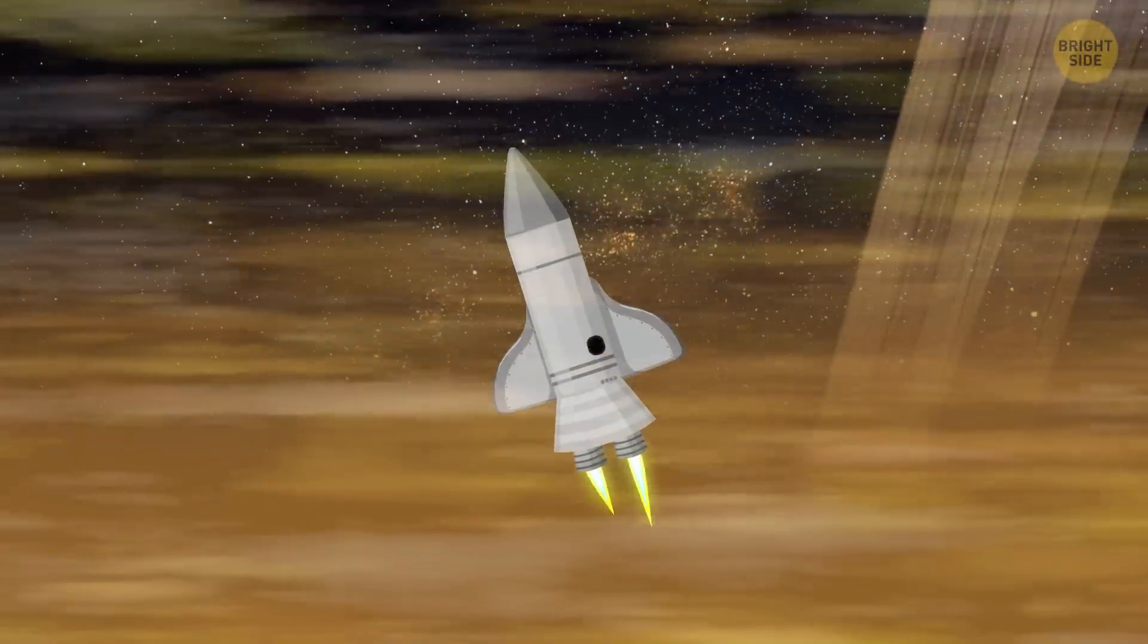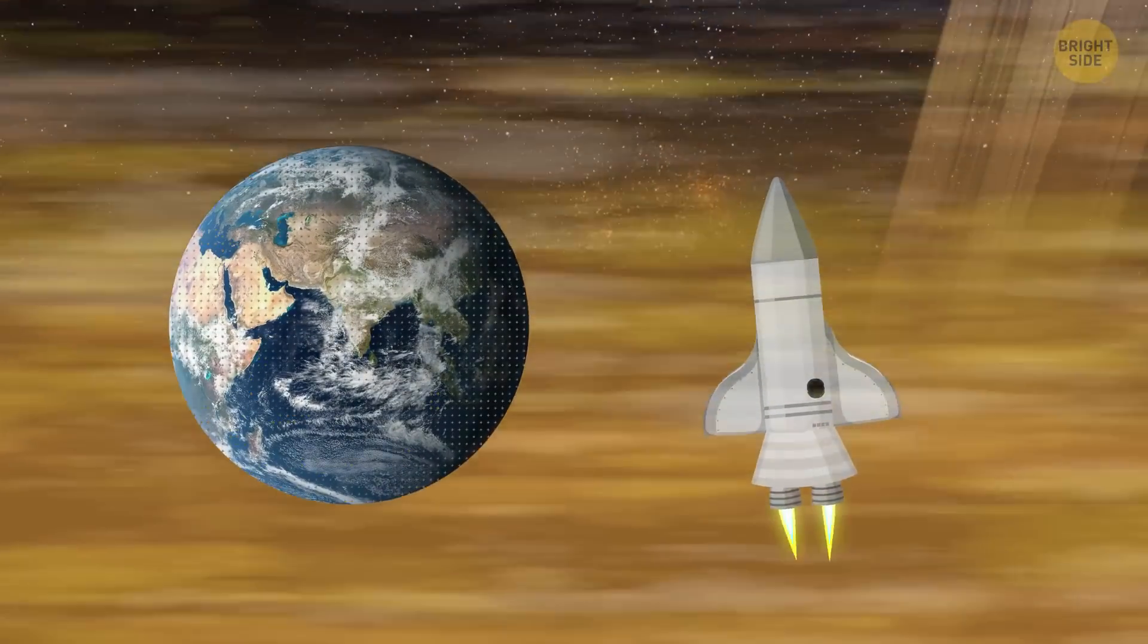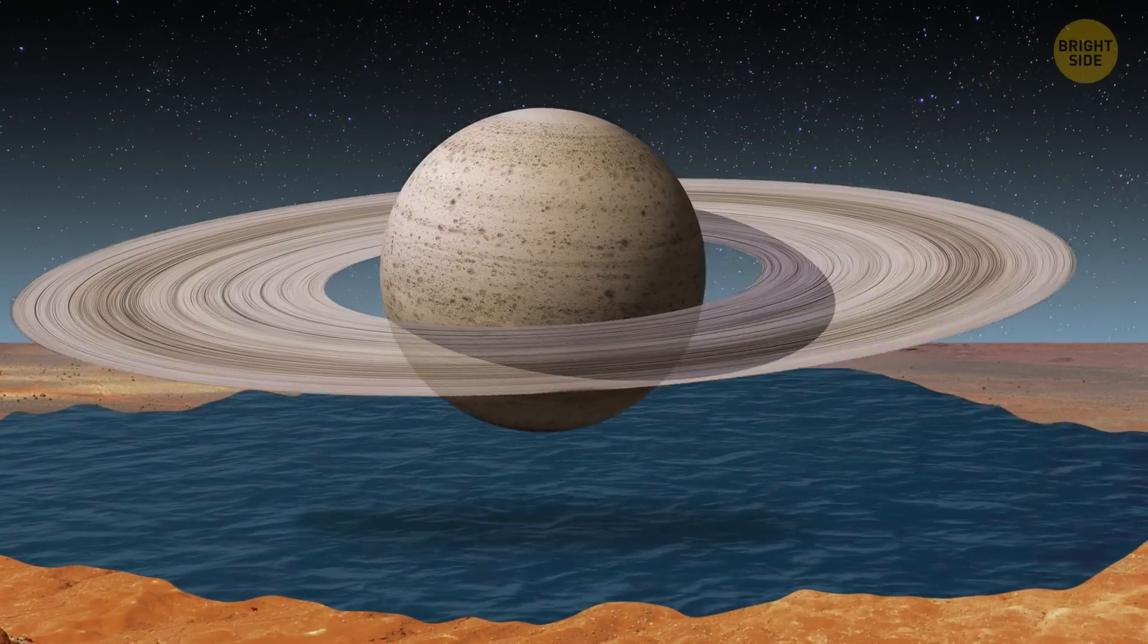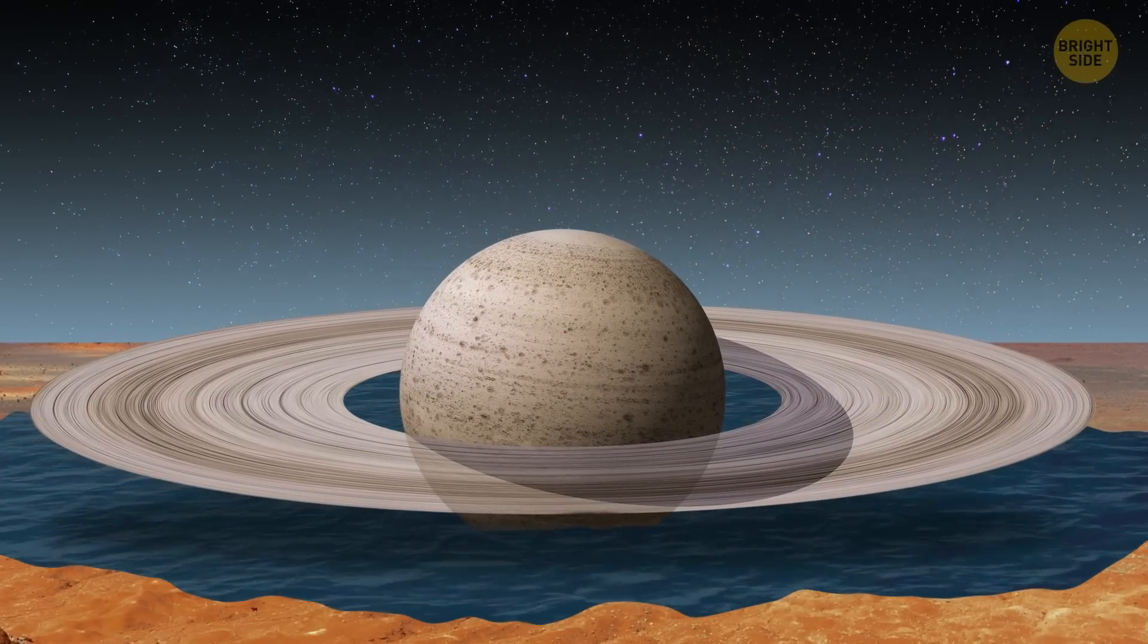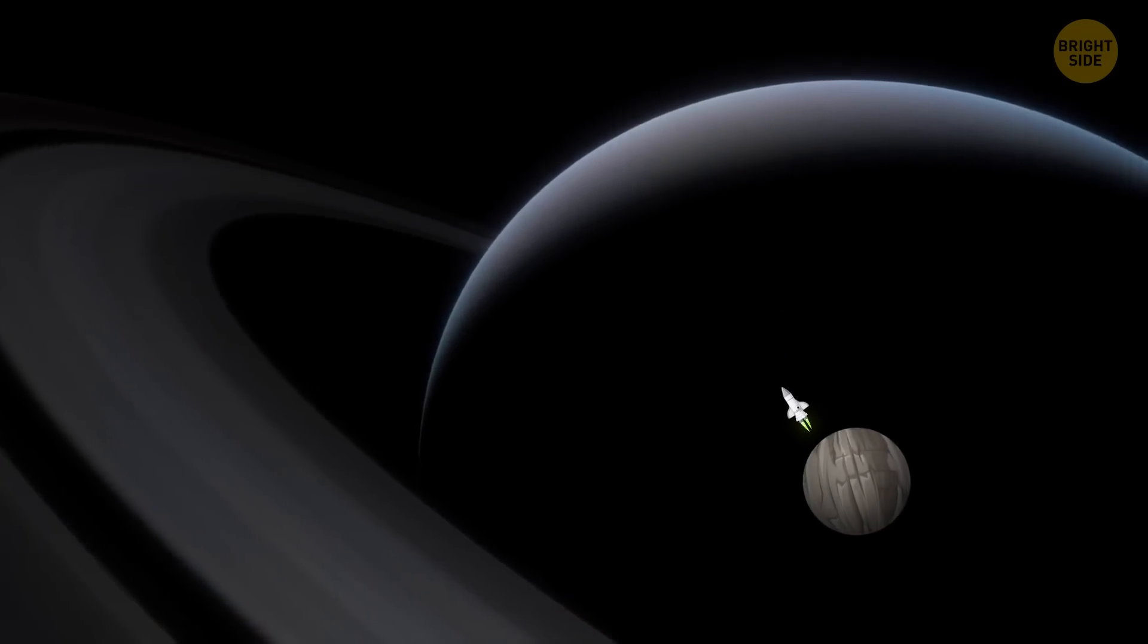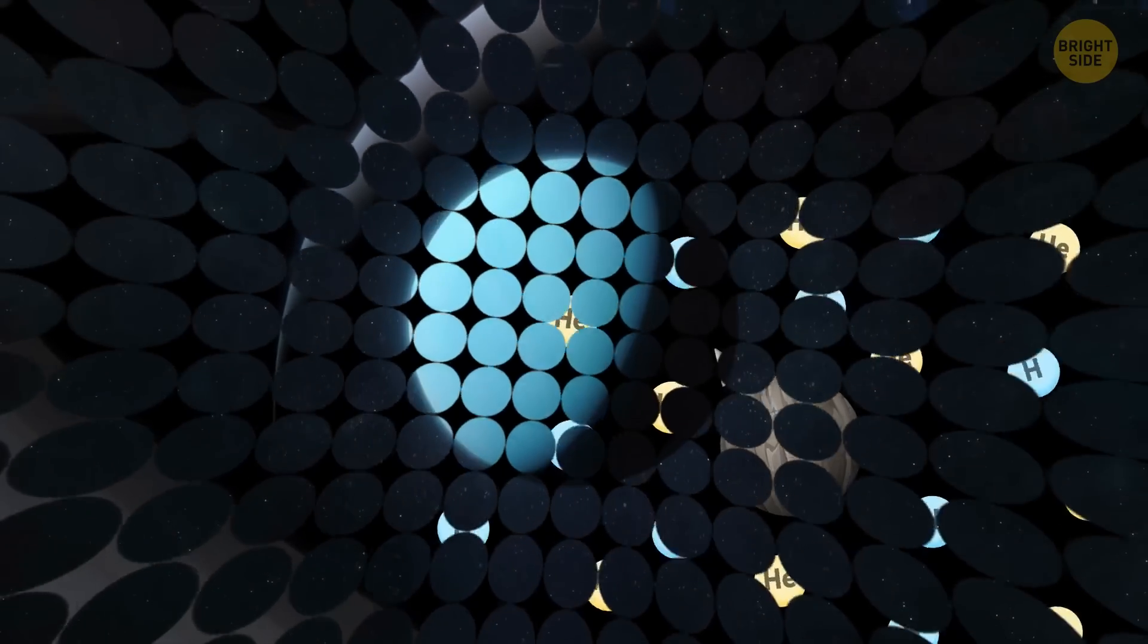Saturn is the least dense planet in the solar system. It has only one-eighth the average Earth's density. If you found a pool of water large enough to fit the ringed planet, the gas giant would float. If you kept going down, you'd probably have found Saturn's core. It's likely to be rocky, with hydrogen and helium surrounding it.